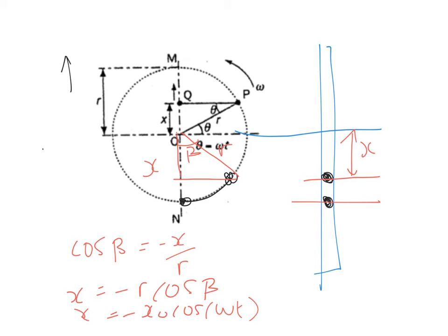The equation for starting from the lowest point is x = -x₀ cos(ωt), a negative cosine function. This makes sense: at t = 0 you start at the lowest point (most negative value) and move up, which traces a negative cosine graph. The equation confirms this directly.